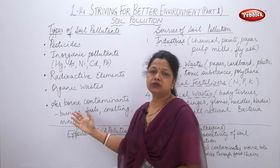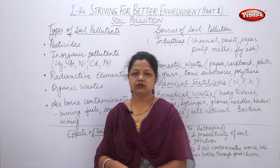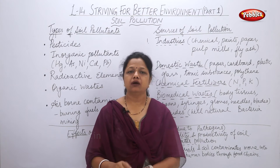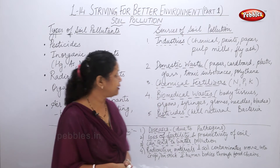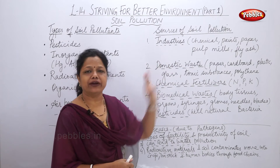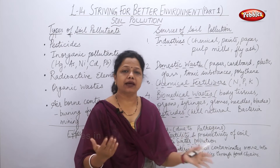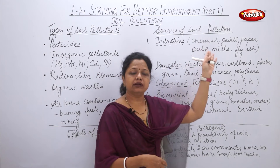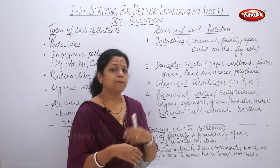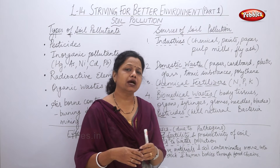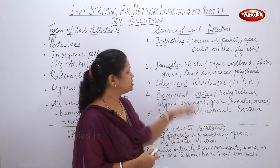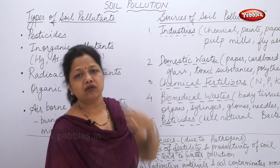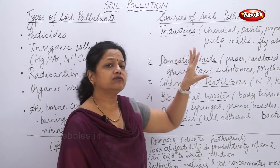So those are the types of soil pollutants mainly responsible for soil pollution. Now, there might be some sources through which these pollutants enter the soil or land. The sources are mainly divided into four to five types. The first source is industries — chemical industries, paper industries, paint industries, pulp mills, and power plants that produce large amounts of fly ash. Industries that extract metals also produce large amounts of pollutants.